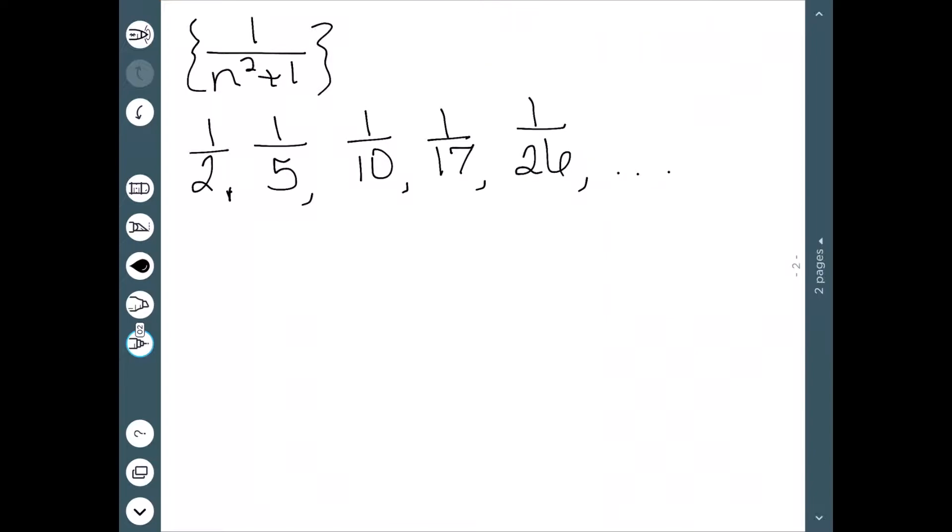You'll notice on all of these that the top is always going to be 1. And the bottom is getting bigger and bigger and bigger. So if I call this sequence a n, the limit as n goes to infinity of a sub n is going to be 1 over a really big number, which is 0.